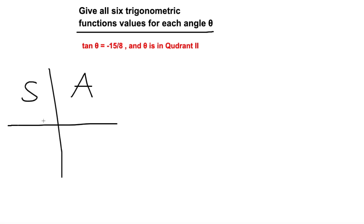In the second quadrant, only sine and cosecant are positive and the rest are negative. In the third quadrant, only tangent and cotangent are positive and the rest are negative. In the fourth quadrant, only cosine and secant are positive and everything else is negative. A way to remember this is: All Students Take Calculus.